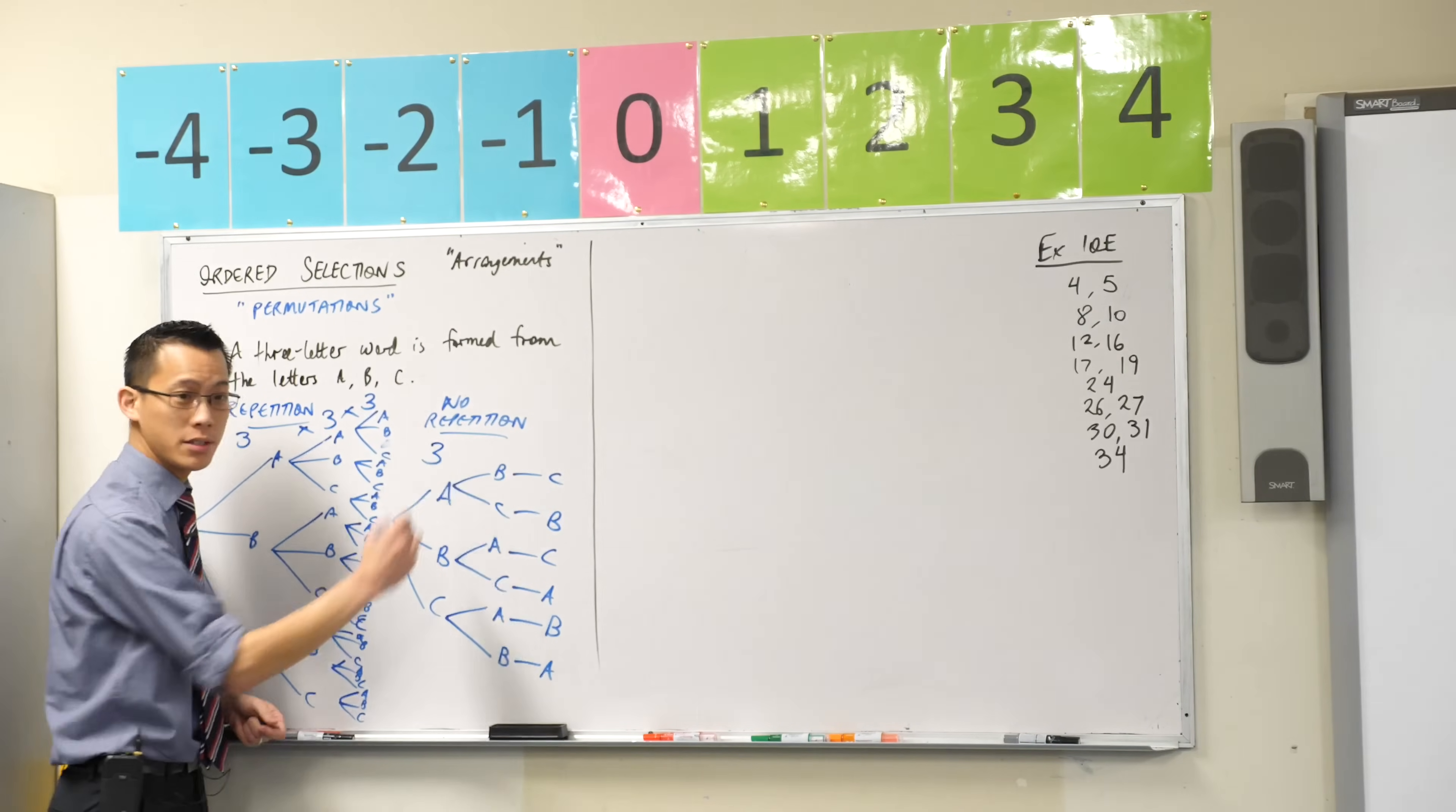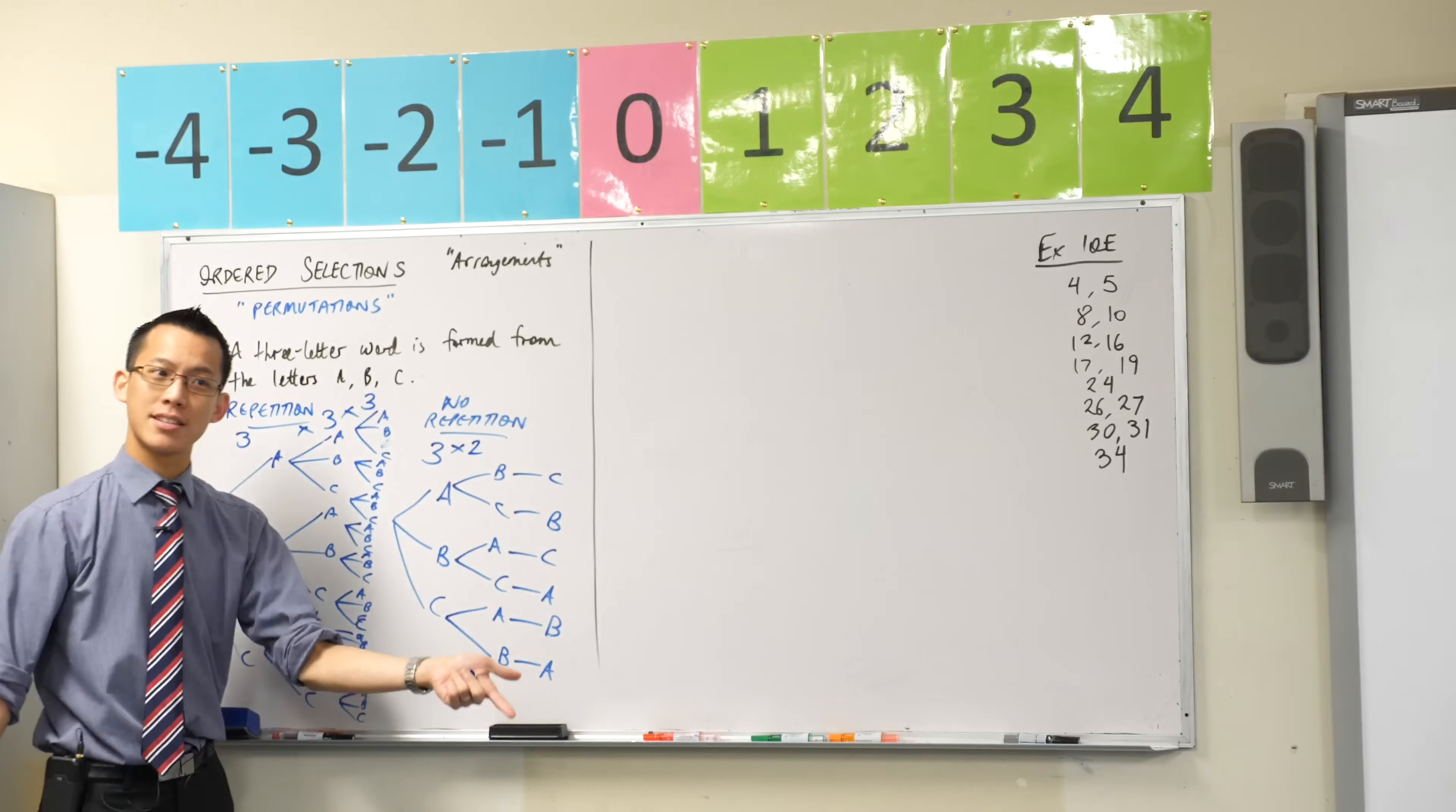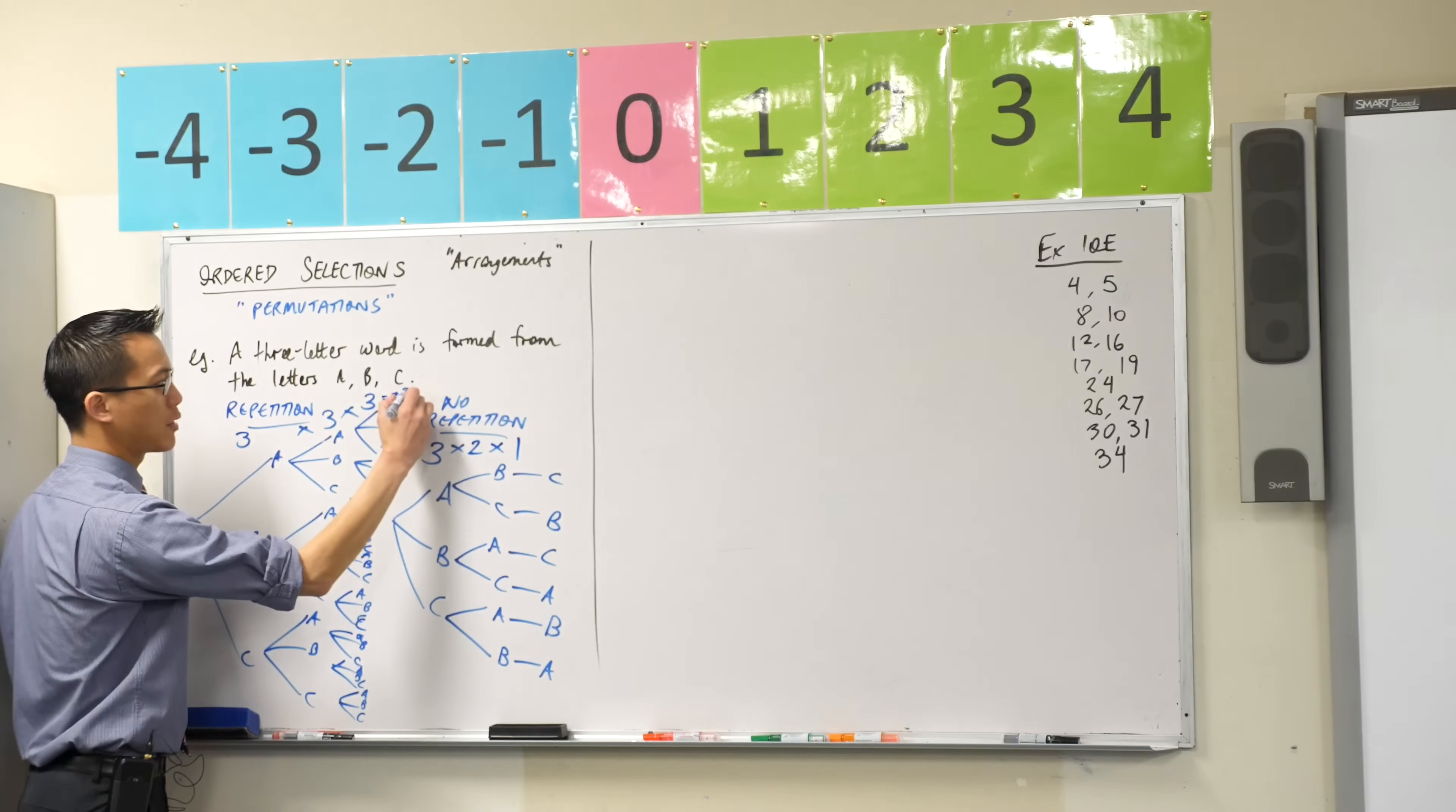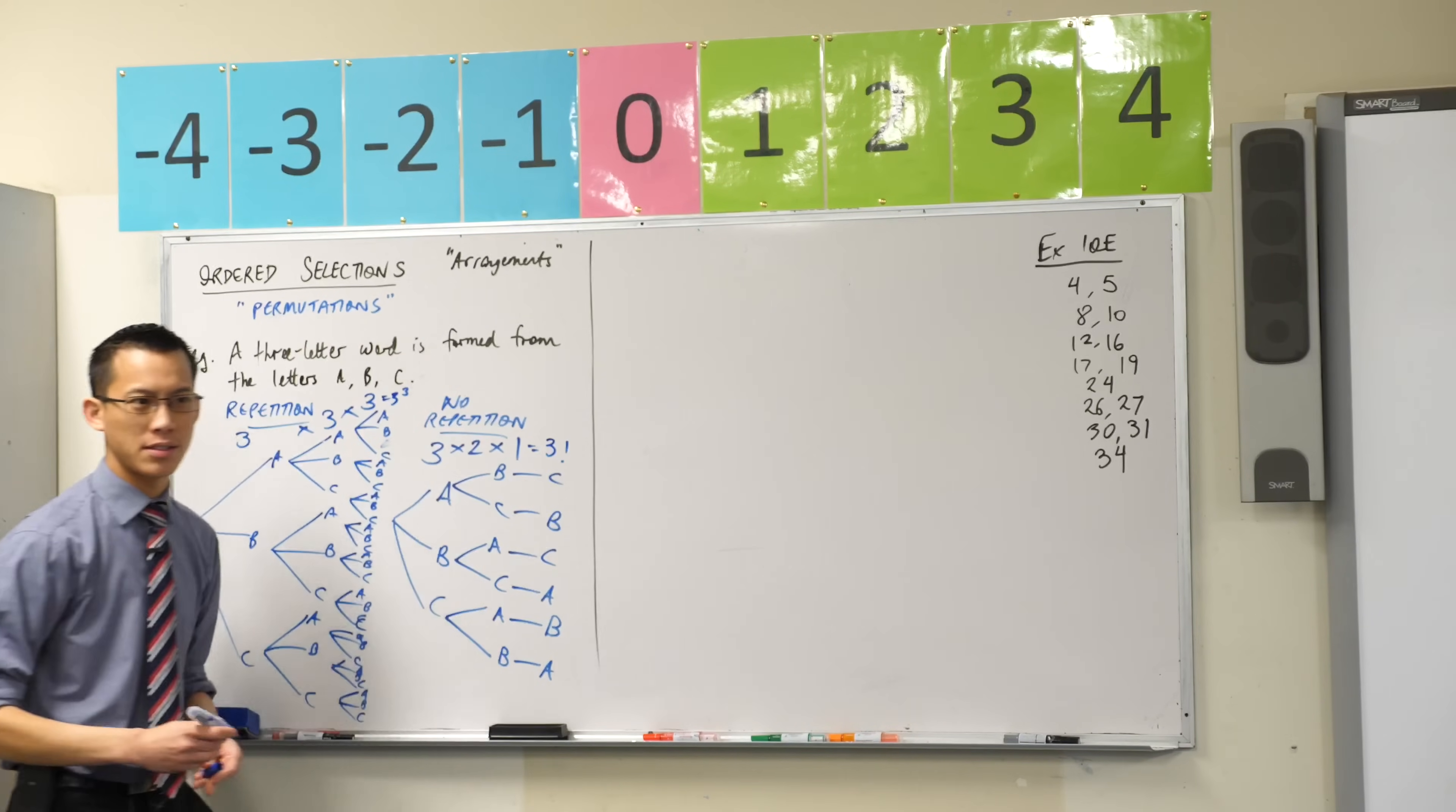I start out with three options, right? And then for the next set of branches, I don't have three again because I don't replace. I don't allow repetition, right? So it'll be three multiplied by two. And then once I get to that last stage, you still have to choose a letter to have your three-letter word, but you only have a single choice in each instance, right? So this three cubed gave us 27. This three times two times one, we have language for this, right? That we learned back in binomial theorem. What would I say here? It's three factorial, right? And that gives us the six.